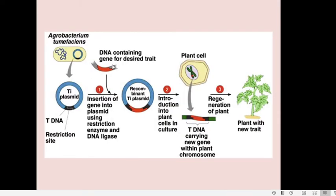We co-infect or co-culture Agrobacterium with the plant cell into which we want to transfer our foreign gene. For example, suppose we want to insert a particular amino acid synthesizing gene into a plant cell. We incorporate this foreign gene into the Ti plasmid, insert it into Agrobacterium, then co-culture this Agrobacterium with those plant cells. The Agrobacterium enters into the plant cell and inserts its T-DNA, which now contains our foreign gene instead of the tumor inducing gene and opine synthesizing gene.